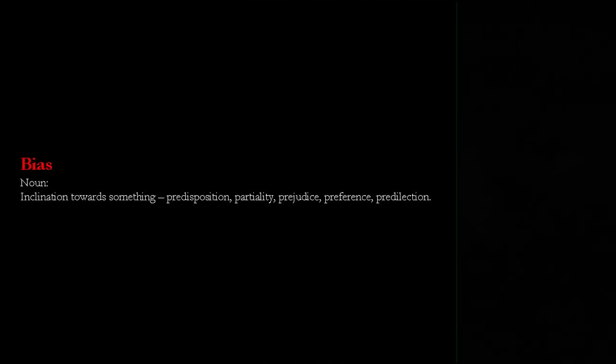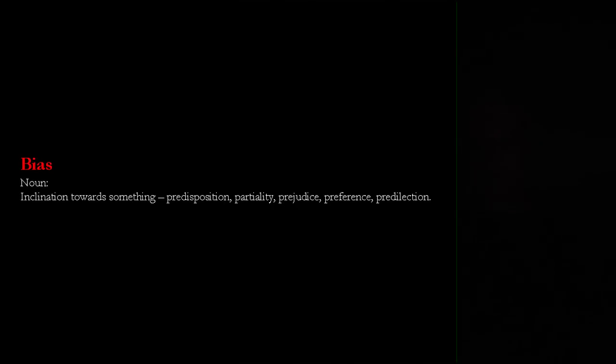Bias. Bias fits into this so subtly because we don't really think about our biases — they just affect what we do, think, and see. It's just part of the background workings of our mind. From the dictionary: inclination towards something, a predisposition, partiality, prejudice, preference, predilection — it goes with the way we think, reinforced by our experiences and the culture we live in.